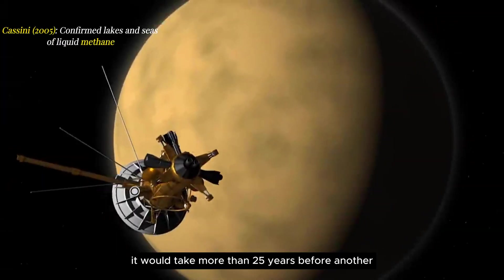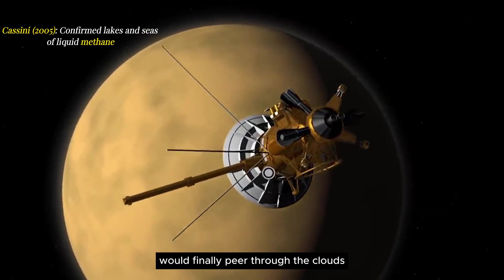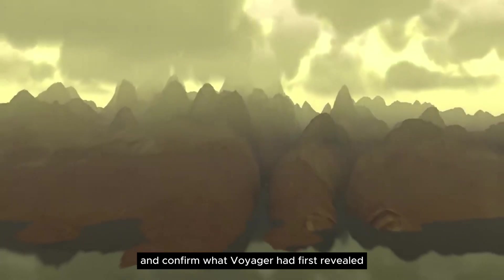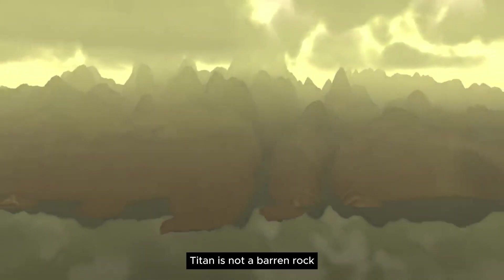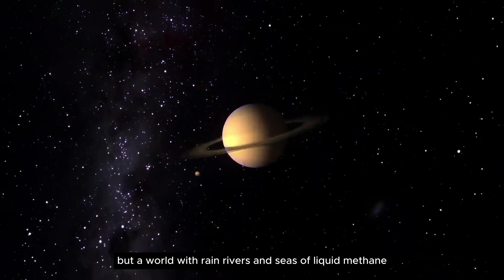It would take more than 25 years before another spacecraft, Cassini, would finally peer through the clouds and confirm what Voyager had first revealed. Titan is not a barren rock, but a world with rain, rivers, and seas of liquid methane.